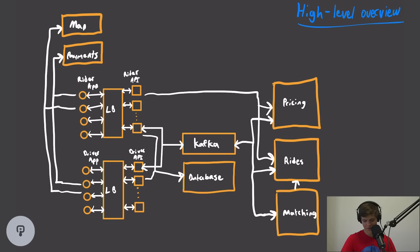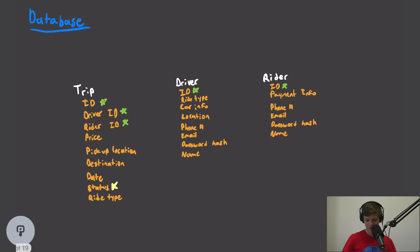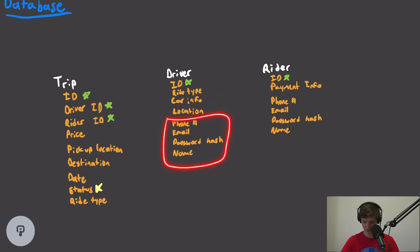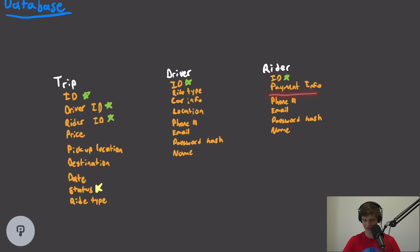Now let's take a look at the database. It needs to hold information about the driver and the rider so they can see their own information and also information about each other once matched. We also need information about each trip. For every user, we need a phone number, name, email, and a password hash. For a rider, we need payment information. On the driver's side, we need the ride type — for example, UberX vs. UberBlack — information about their car so the rider can identify them, and the last known location of the driver.